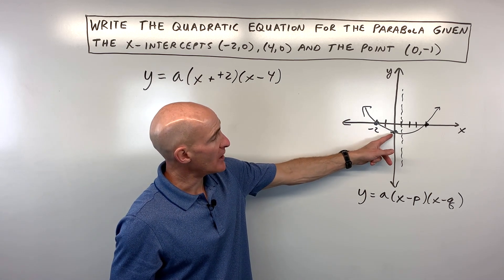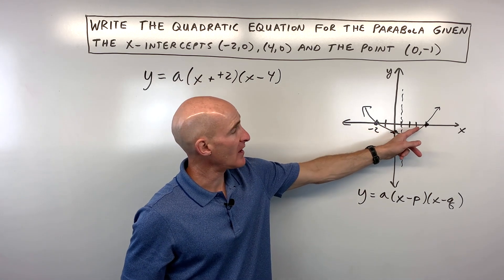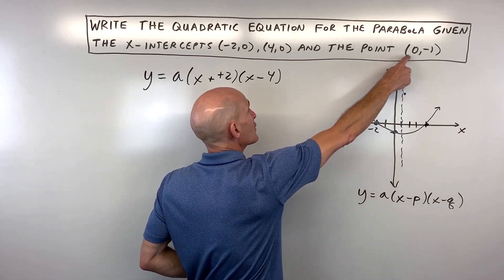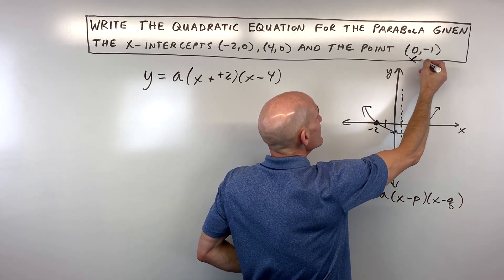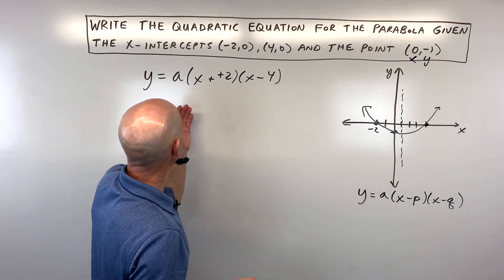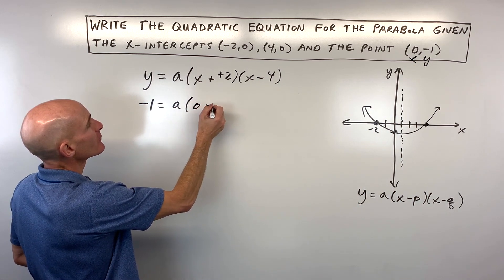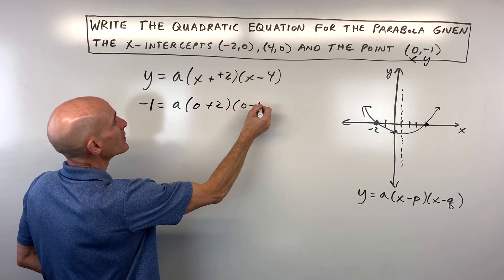And the way that we do that is we use another point on the graph, not one of the x-intercepts, but an additional point that's given here, which is the point 0, negative 1. Now you can see 0 is x and negative 1 is y. So if we substitute those values into our equation here for x and y, we can solve for a.